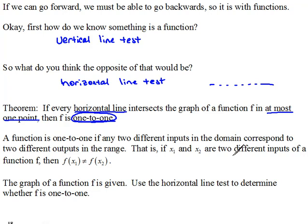Now, we have this sort of definition here that says a function is one-to-one if any two different inputs in the domain correspond to two different outputs in the range. Basically, this is the definition of what it means to be one-to-one, but we can think of it in a little bit easier terms also.